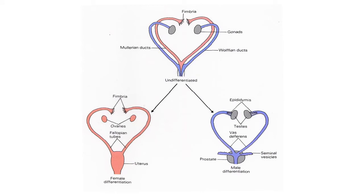The undifferentiated state results in male differentiation when the Wolfian ducts are present, while the Mullerian ducts are responsible for female differentiation. One of the hormones released by the male testes is Mullerian inhibiting substance — that is what inhibits the Mullerian system. The Mullerian system is inhibited by the Mullerian inhibiting hormone.